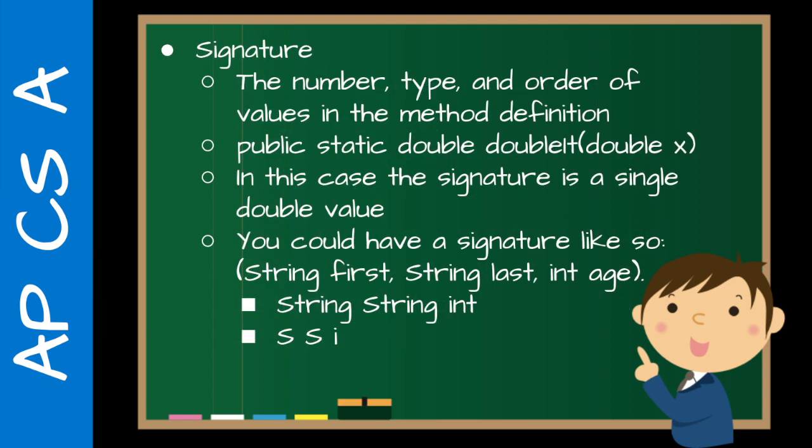The signature. You'll see the concept of a signature. And again, it's important because there are multiple choice questions on the AP exam where this is important. So let's say you have an example here you see on the screen at the bottom, you have string, string, int, and then trying to send a string and int, string, it's not going to work. So the signature refers to the number, type and order of values in the method definition. So this example, public static double doubleIt, double x, a lot of doubles there. So the signature here would just be a single double.